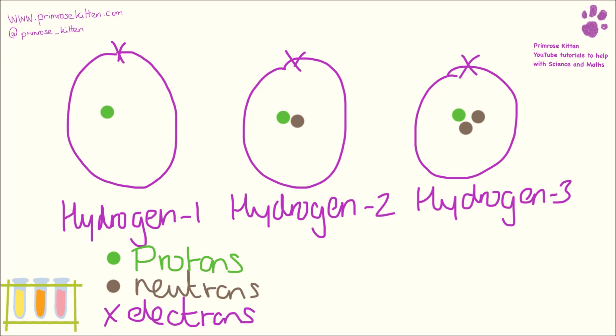So here we have three isotopes of helium: Helium-1, Helium-2 and Helium-3. The 1, 2 and 3 just refers to how much it weighs. Helium-1 weighs 1, Helium-2 weighs 2, and Helium-3 weighs 3, and the reason for the difference in their weights is the number of neutrons. Helium-1 just has 1 proton and no neutrons, Helium-2 has 1 proton and 1 neutron, and Helium-3 has 1 proton and 2 neutrons.